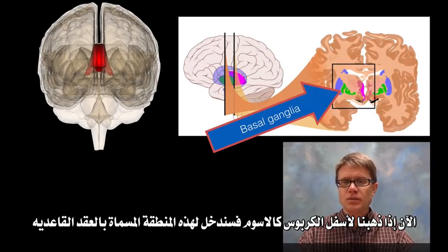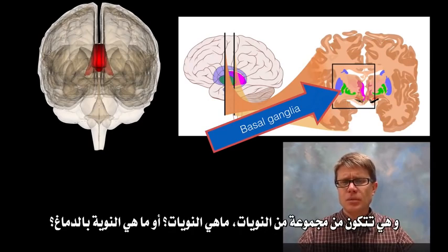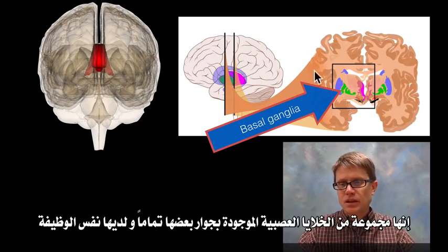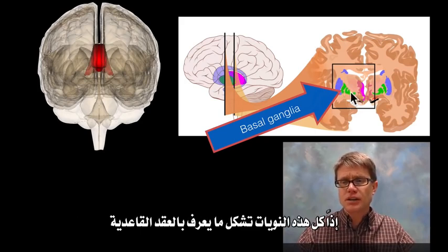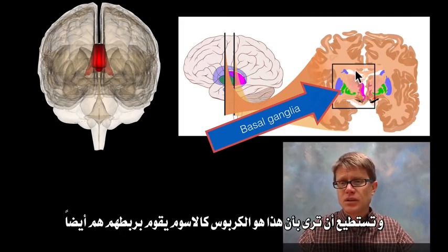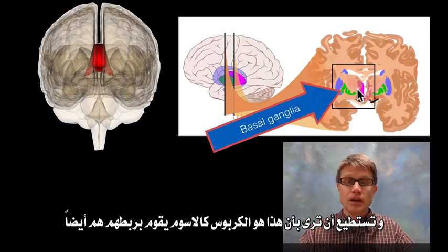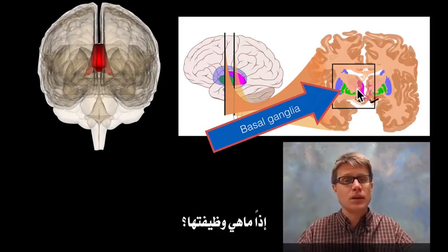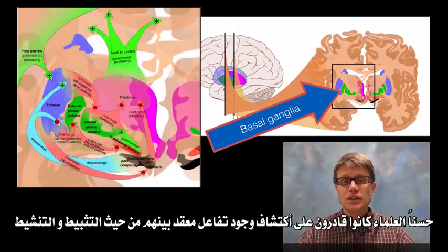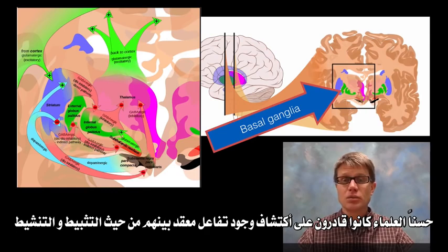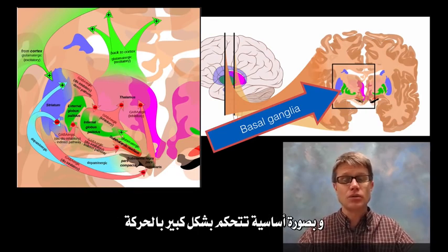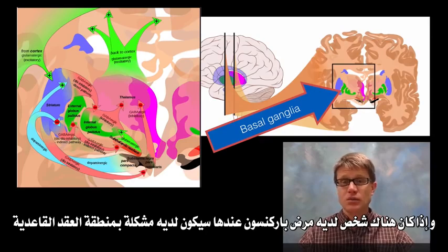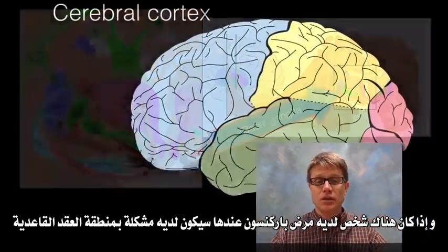Just below the corpus callosum is the basal ganglia, made up of a bunch of nuclei — groups of neurons right next to each other with the same function. Scientists have figured out a complex interaction of inhibition and excitatory responses between these neurons. The basal ganglia controls a lot of our motor control, and people with Parkinson's disease have problems in this basal ganglia area.